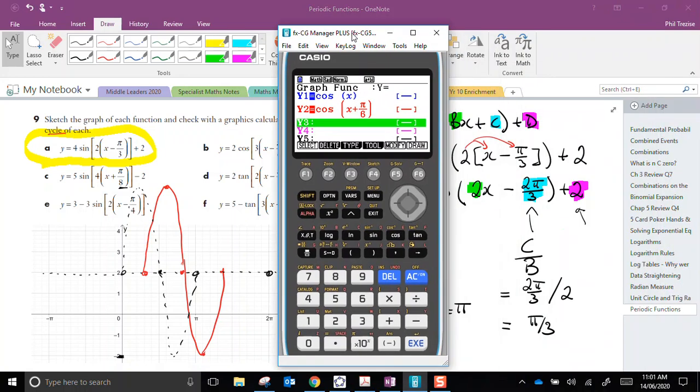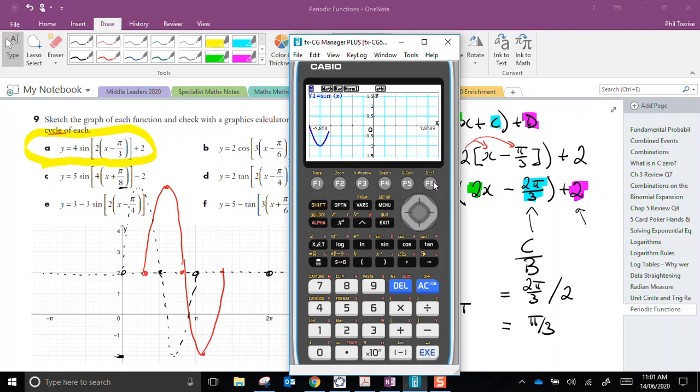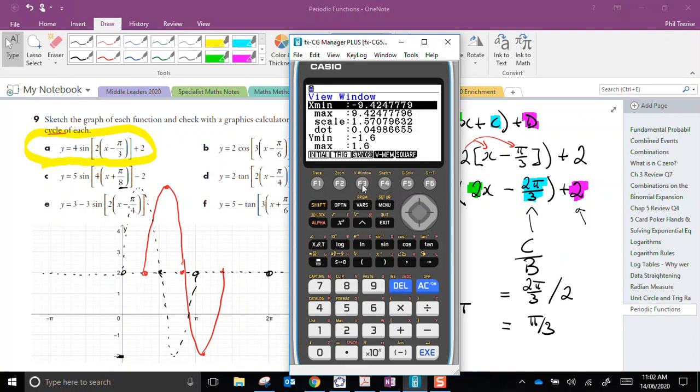Let's take a look on the graphing calculator to see how we did. Our base function was sine. Now, I might build this up bit by bit. We begin with the vertical shift of plus 2. So, let's do that. I'm going to have to change my view window scale here.